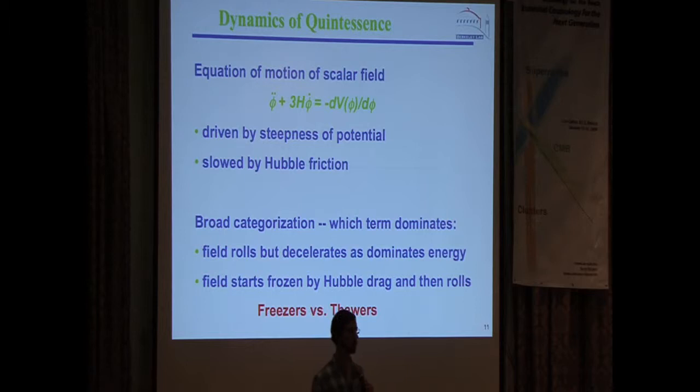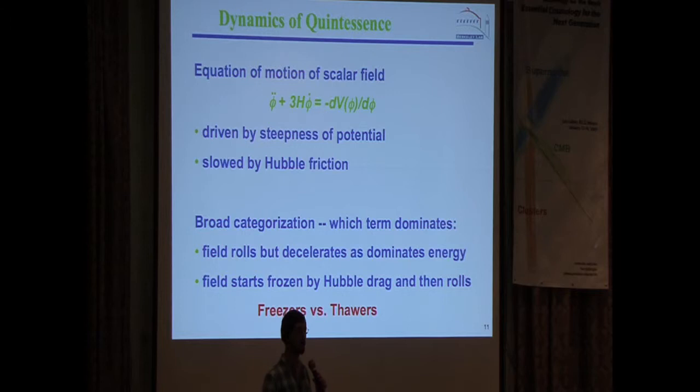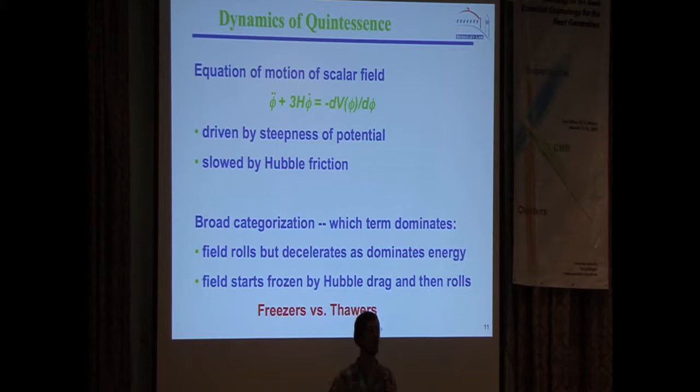We have the Klein-Gordon equation, the equation of motion of the scalar field. The question is: do we have to go through every single scalar field theory to compare it to observations, or is there a more phenomenological model-independent approach where we can talk about the general characteristics a scalar field must have to accord with observations? Looking at the equation as a driven harmonic oscillator — you have a driving force term and a friction term — you're driven by the steepness of the potential and slowed down by Hubble friction. Perhaps you can get a general characterization based on which of those terms is dominant.